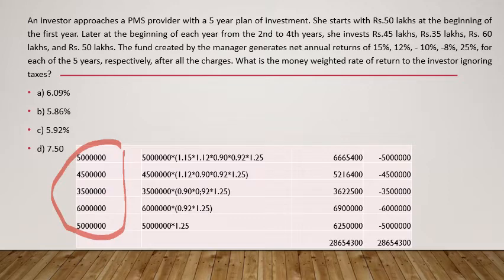The fund created by the manager generates returns of 15%, 12%, followed by two negative returns of minus 10% and minus 8%, and then 25% over the five years respectively, after all charges. What is the money-weighted rate of return (MWRR) to the investor, ignoring taxes? We take each year's investment and apply the return on that.